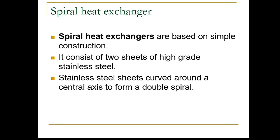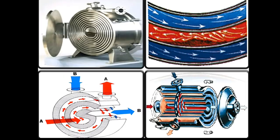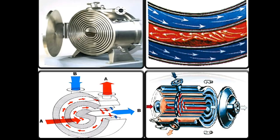Now the spiral heat exchanger. Spiral heat exchangers are based on simple construction. It consists of two sheets of high-grade stainless steel curved around a central axis to form a double spiral. To maintain temperature, steam is passed through one spiral and medium through the other in countercurrent flow.